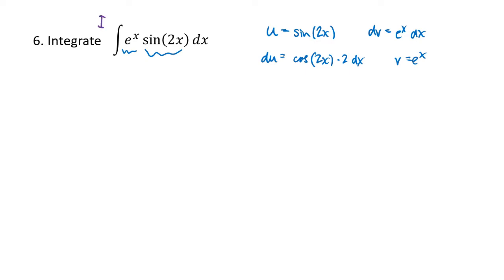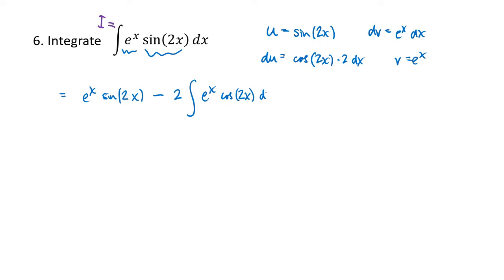Parts tells me that i equals u times v — e to the x times sine of 2x — minus the integral of v du. We get a factor of 2, and then e to the x times cosine of 2x. Looking at what we get after applying integration by parts, things aren't really getting better or worse — we've just exchanged sine for cosine. But that might lead us to think: if we do this again choosing parts the same way, we'll get back to sine and might be able to solve for the original integral.